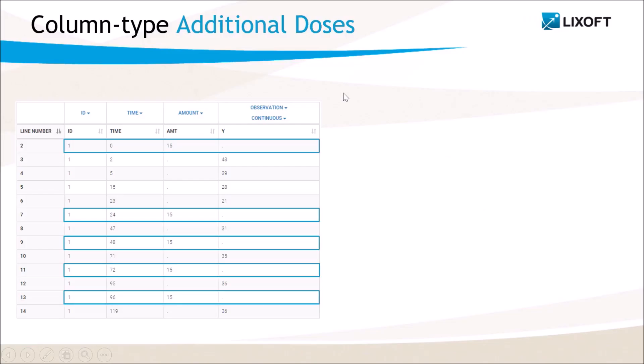One way to encode these multiple doses in the dataset is with one row per dose as can be seen here. The dataset contains 5 doses of the same amount.